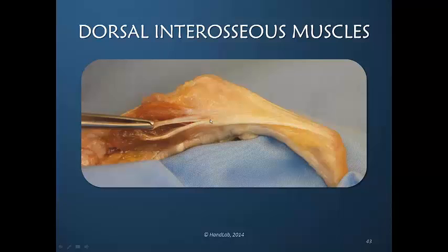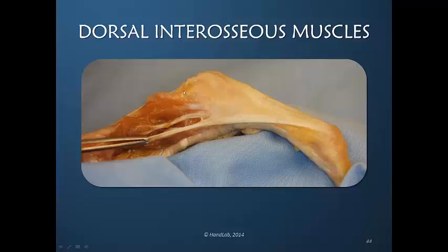The middle one and the most volar one is directed to the lateral band. So even though we have reviewed this anatomical drawing and the anatomy is somewhat different here, the principle is the same: the interosseous muscles are sharing their power throughout the dorsal apparatus into different fiber units.